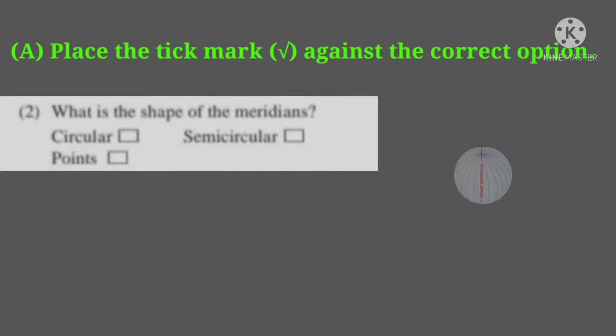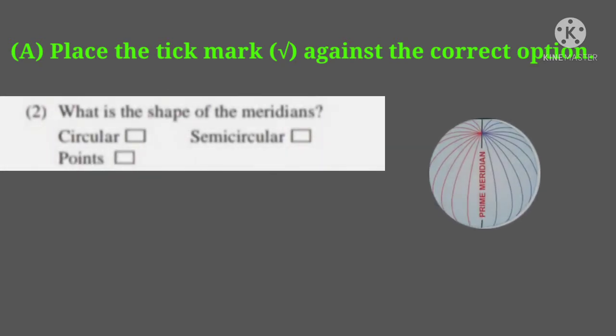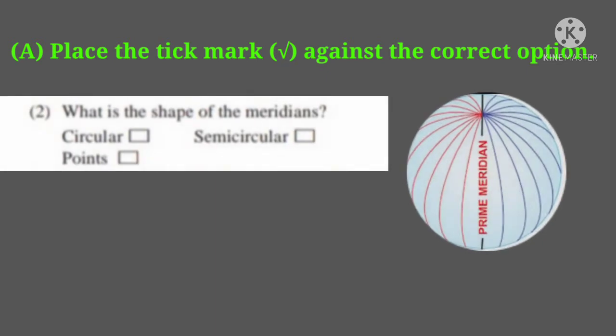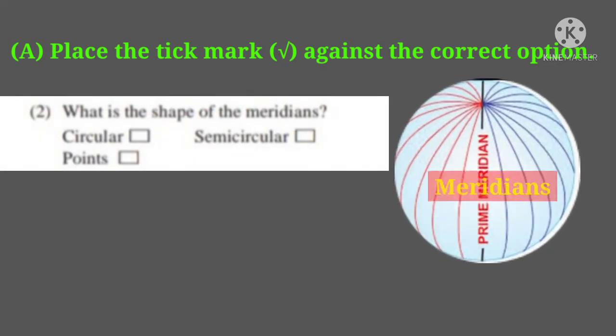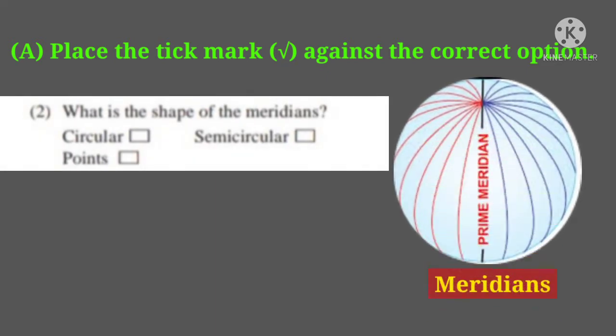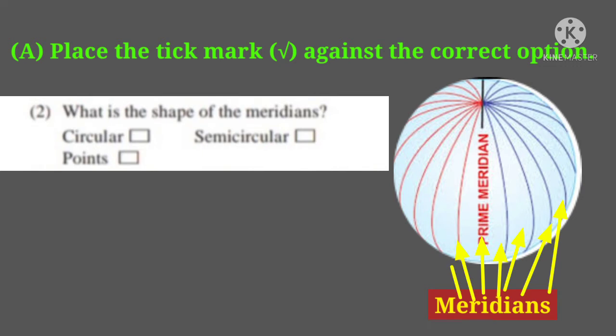Second question: what is the shape of the meridians? Here again three options are given: circular, semicircular, and points. Students, meridians are semicircular.